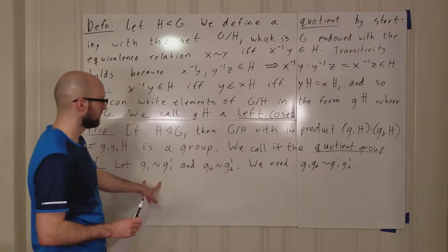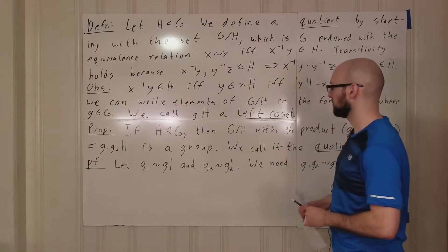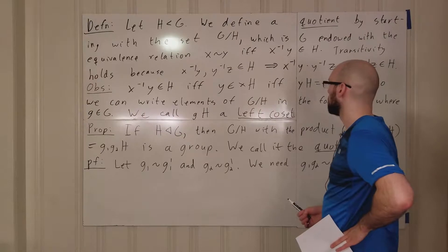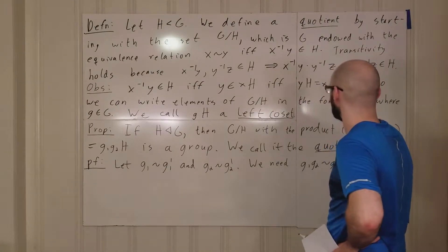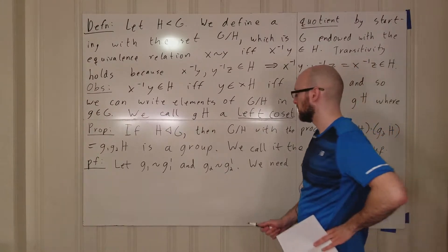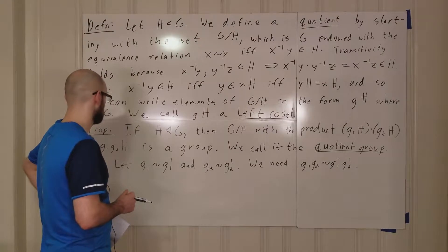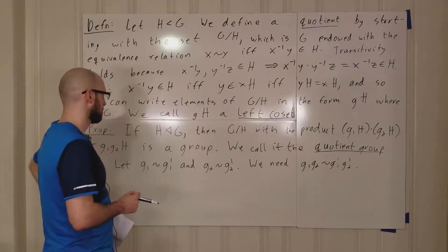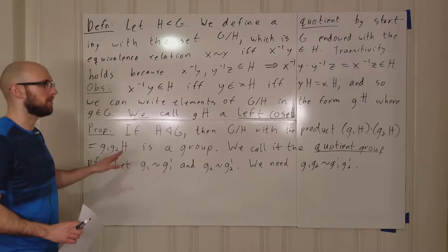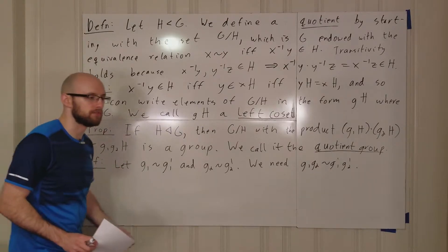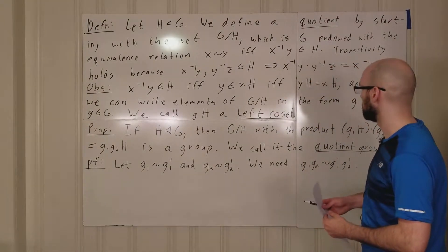What we want to check is: if we replace g1 and g2 with different coset representatives, we're going to get the same coset. So basically, we're checking that replacing the g1s and g2s with different coset representatives gives the same result.